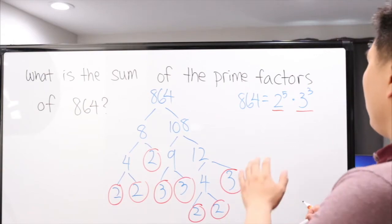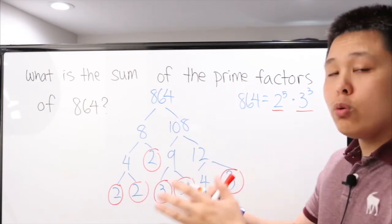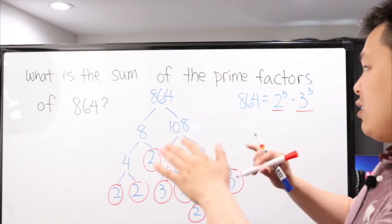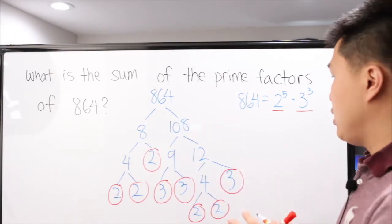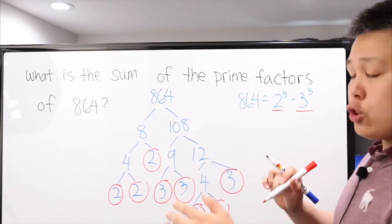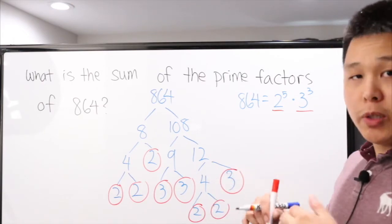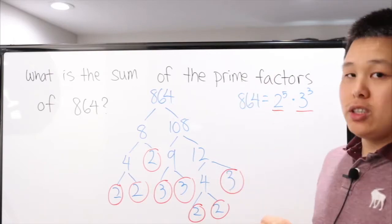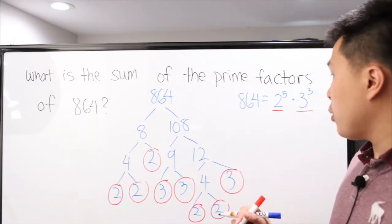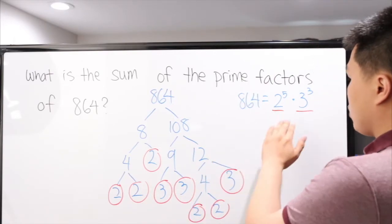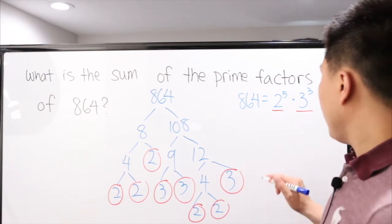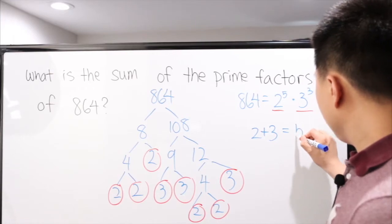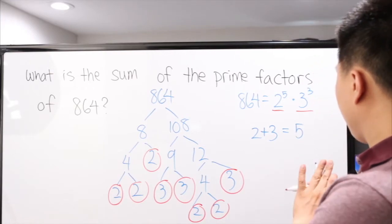Now, what do we do next? Well, there are two interpretations — that's where the confusion comes in. The first interpretation assumes the sum of the prime factors means the sum of all the unique prime factors. The unique prime factors here are just 2 and 3. So you would add 2 and 3 together and get 5, and that would be your answer.